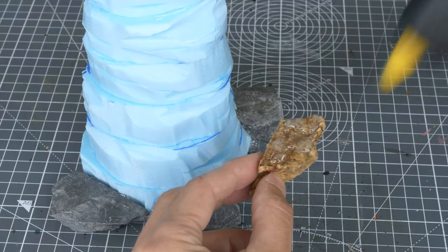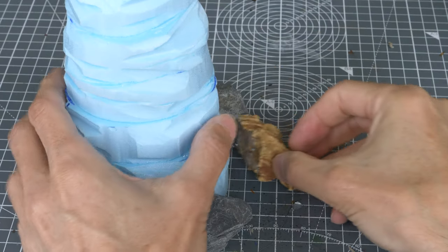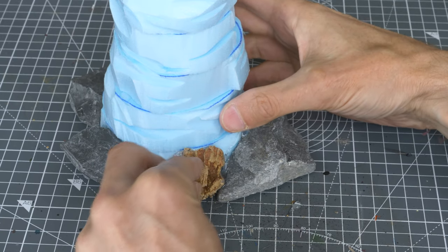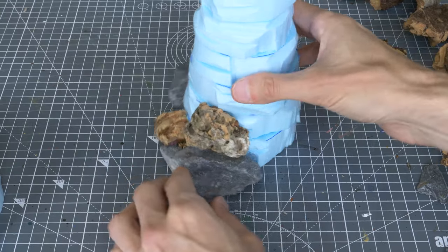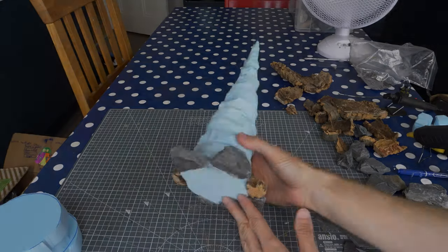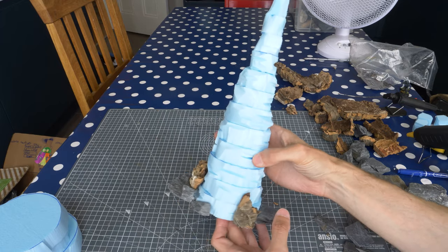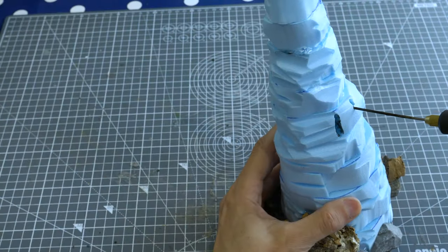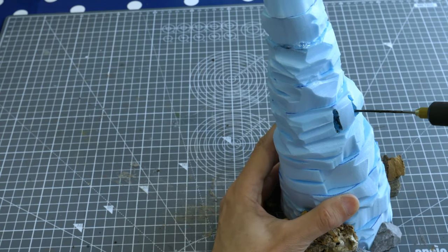I might also stick down some cork bark to create some further textural variation. This completes the basic structure of the large spire. To finish the stage off, I'm now using the wand attachment to carve some of the characteristic slits we sometimes see on Geonosis.